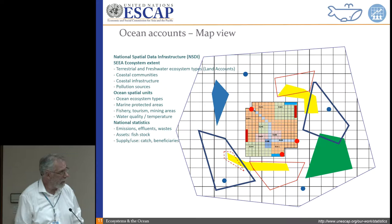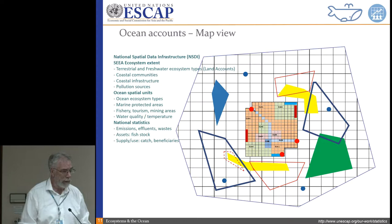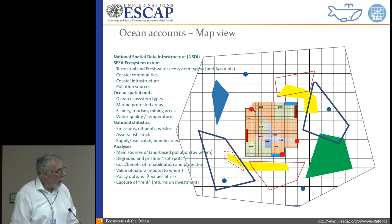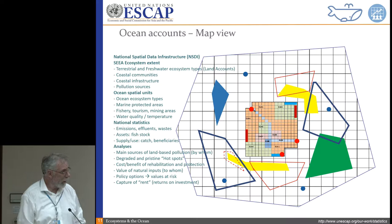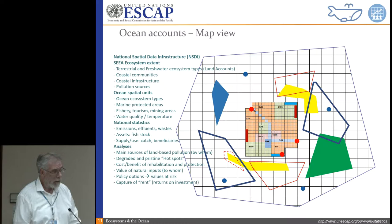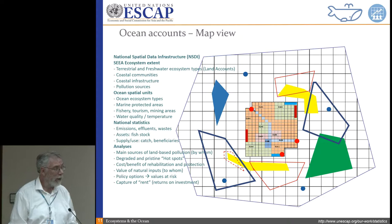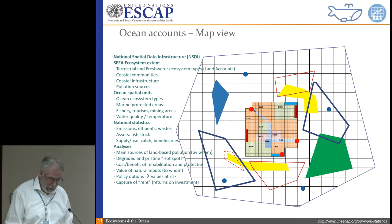We can look at what fish stock data countries have, the supply and uses of the catch, and who the beneficiaries are — that's the social dimension we'll be talking about. We can look at the main sources of land-based pollution, degraded and pristine hotspots, cost-benefit analyses of rehabilitation and protection, the value of natural inputs to the economy, policy options, what values are at risk if we don't protect the ocean ecosystems, and investment versus benefits.